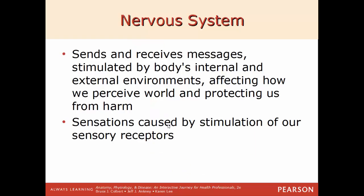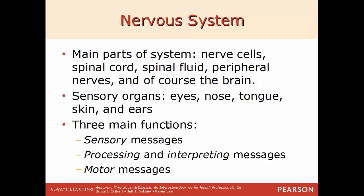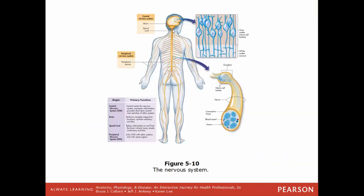The nervous system sends and receives messages stimulated by the body's internal and external environments, affecting how you perceive your world and react to it. Everything you hear, see, touch, taste, and feel is turned into an electrical impulse sent to the brain. The main parts of the system include neurons, the spinal cord, spinal fluid, peripheral nerves, and the brain — the most important part. The sensory organs — eyes, nose, tongue, skin, and ears — receive sensory information, which is processed by the brain.